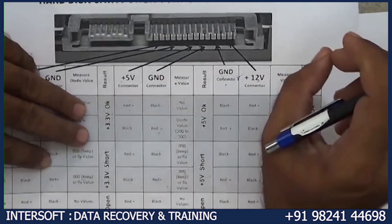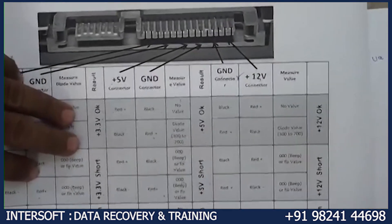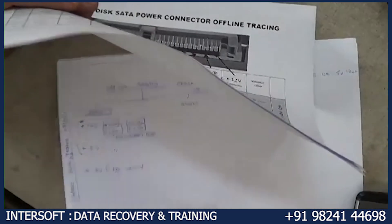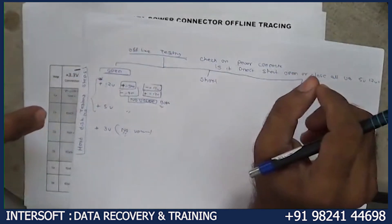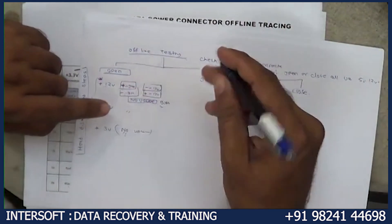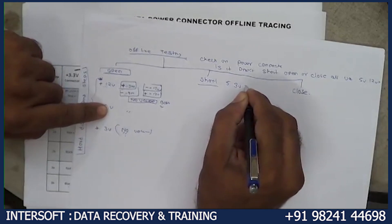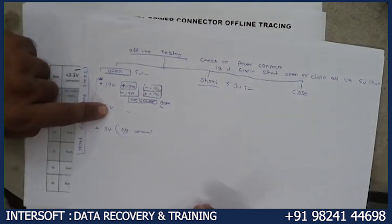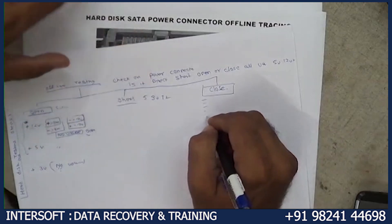First we have to check all three powers: short, open, or close. If any one voltage is open, we have to check that open line — check if fuse is open, resistor is open, or diode is open. If any one is short — 5V, 3.3V, or 12V — then we check the shorting process. And if all things are okay, then we check other items.